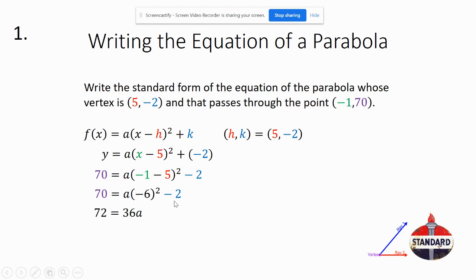And what I did was I added 2 to each side to eliminate the minus 2. That's why the minus 2 has gone on the right, and you have 2 added to 70 right there. And then we divide each side by 36 so that the a value is 2.